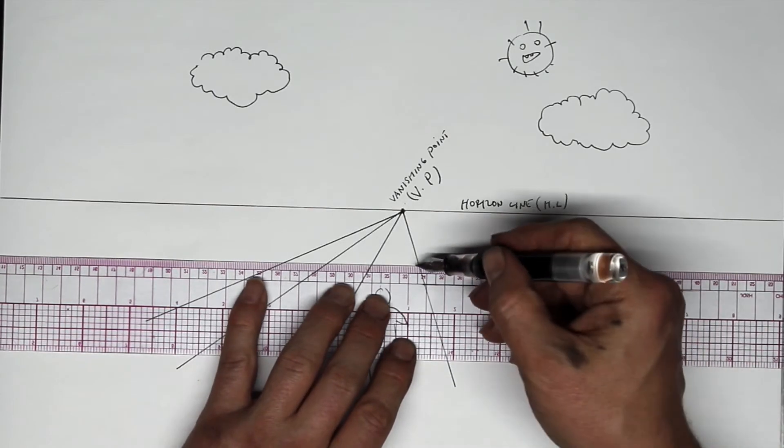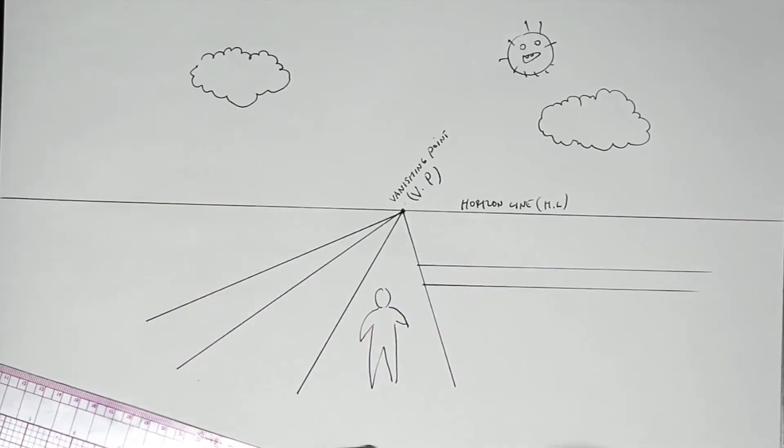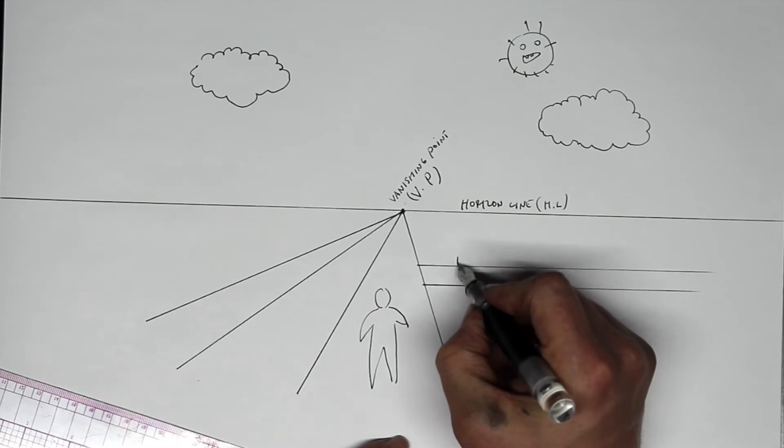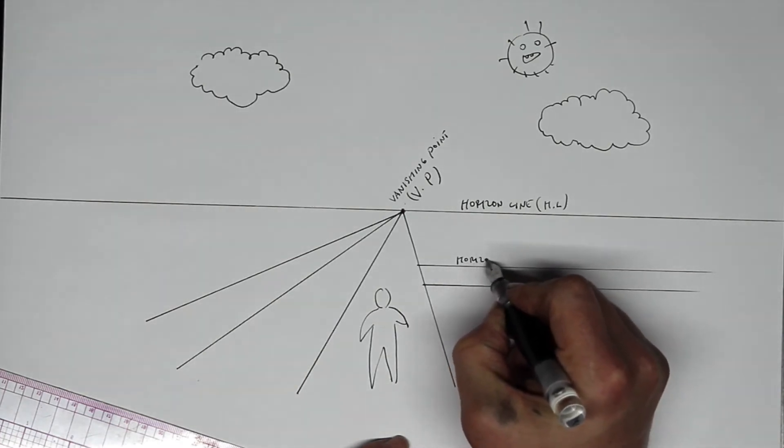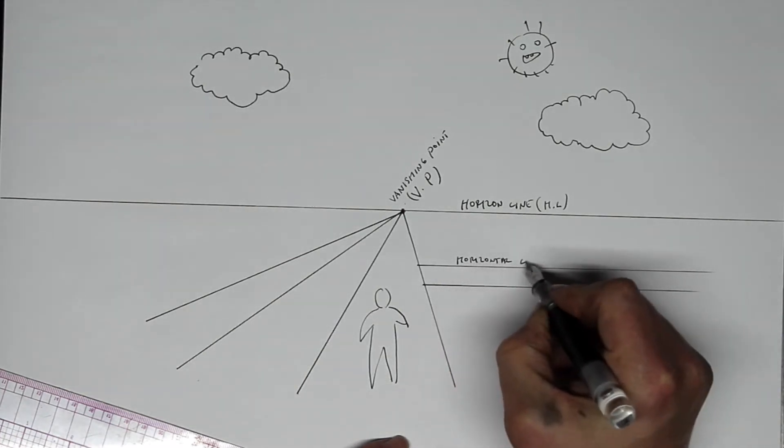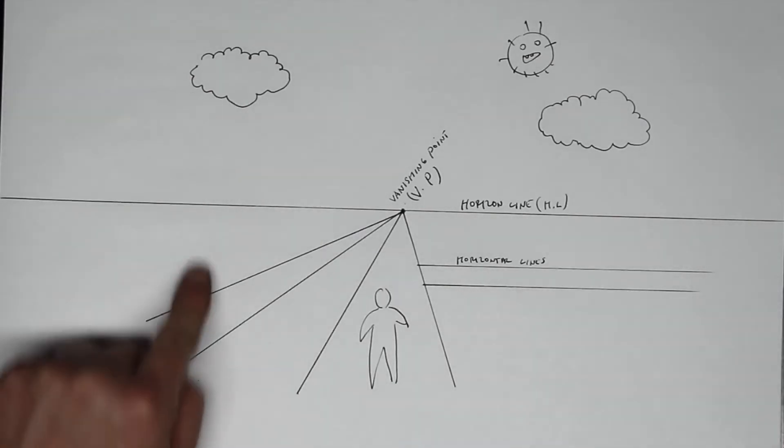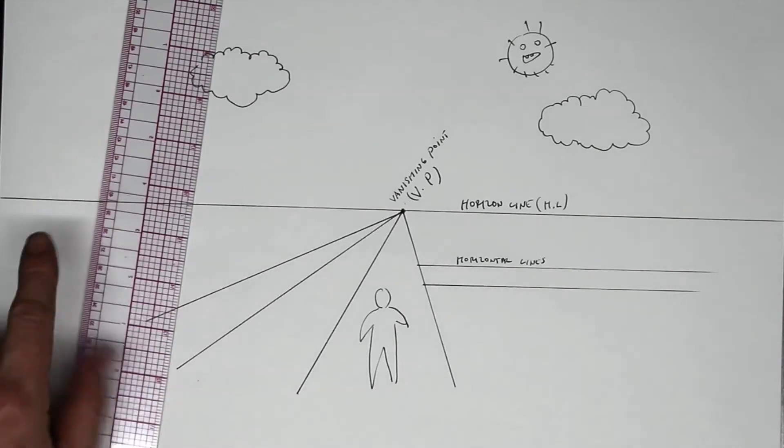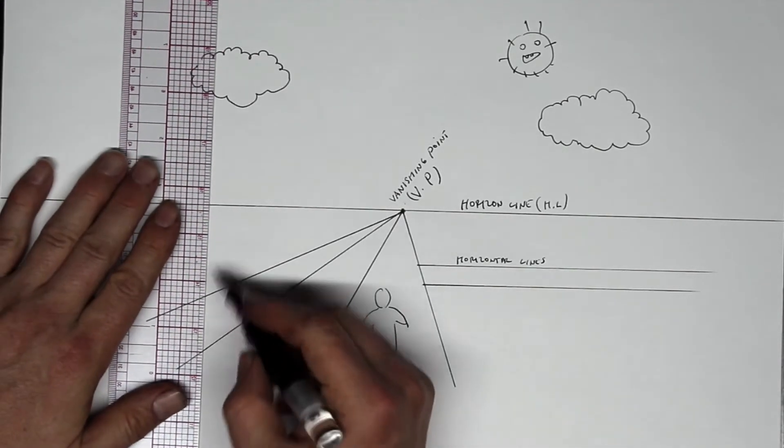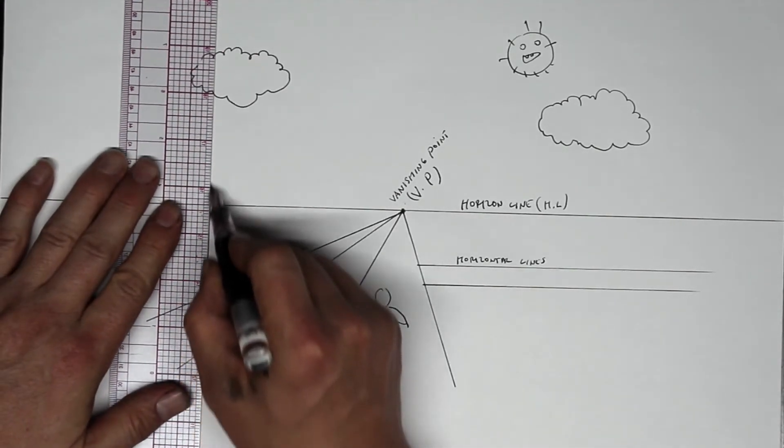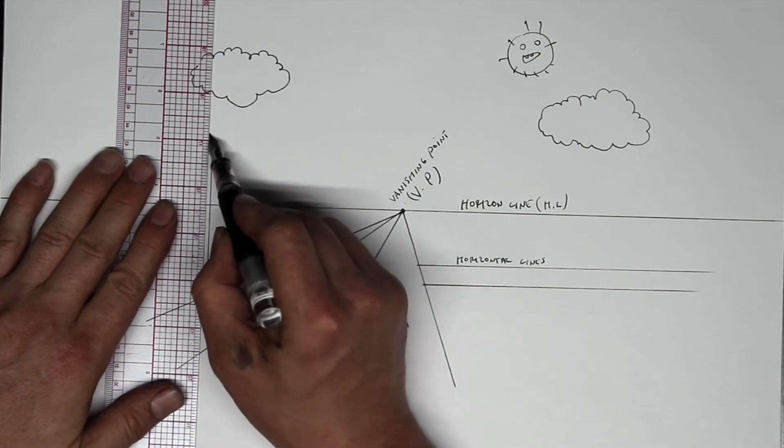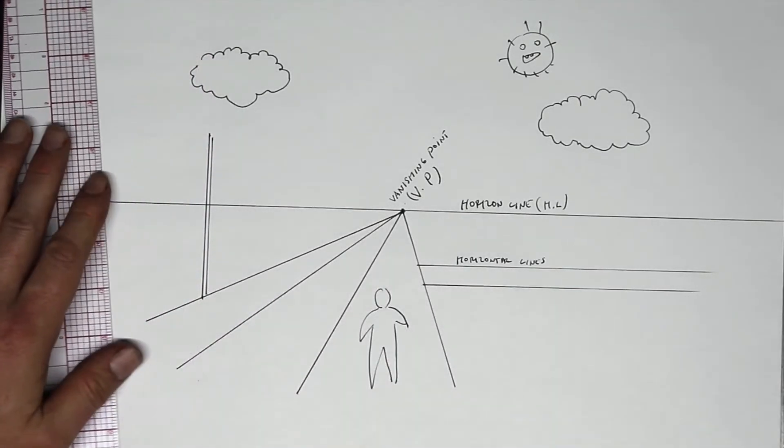Let's say we have a series of telephone poles on this side. The lines on the telephone pole are going to be vertical.